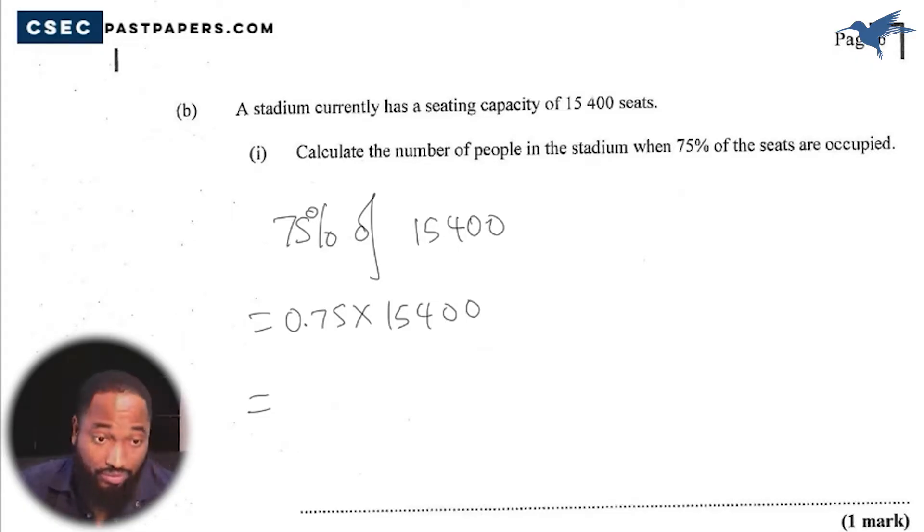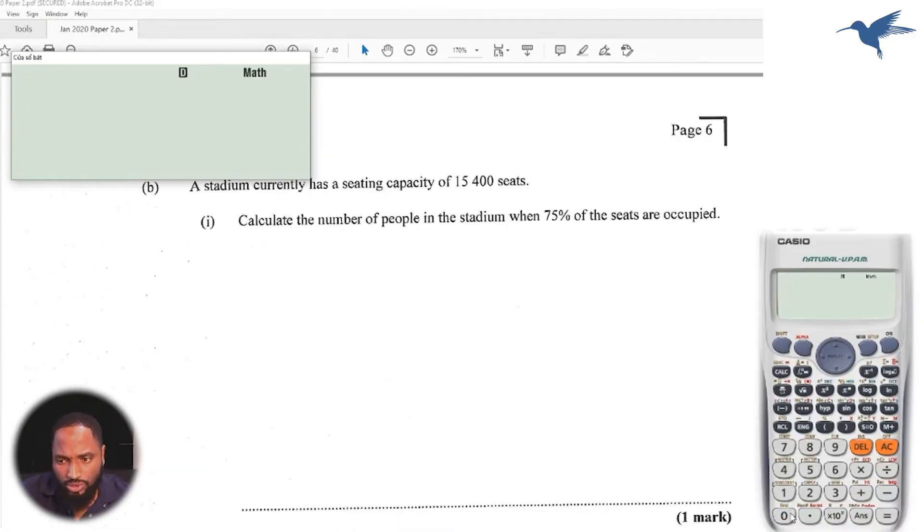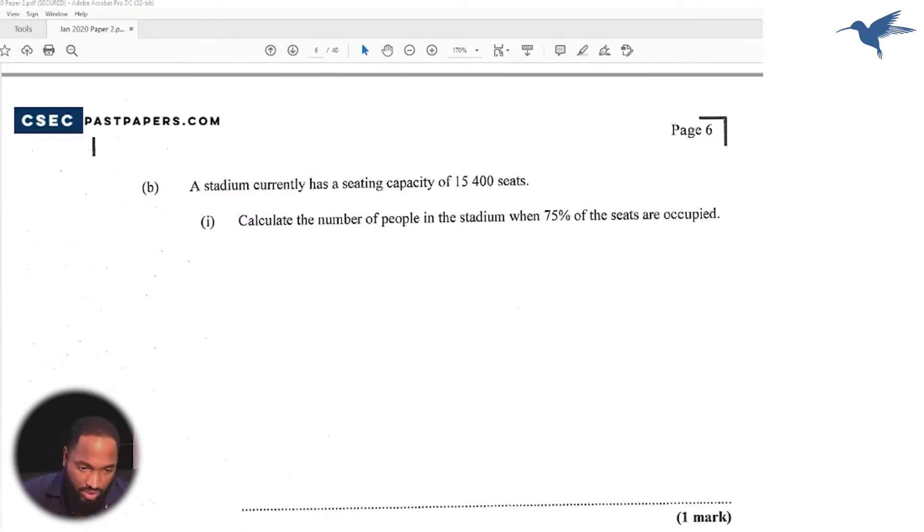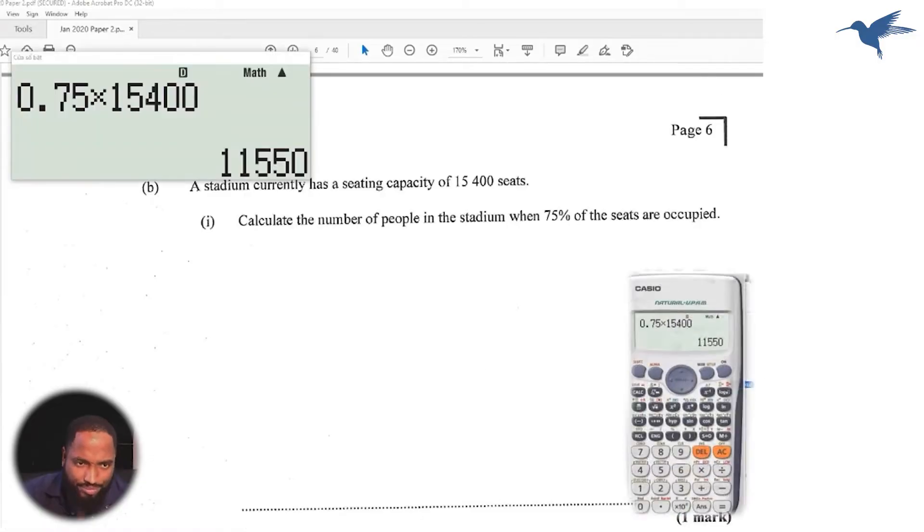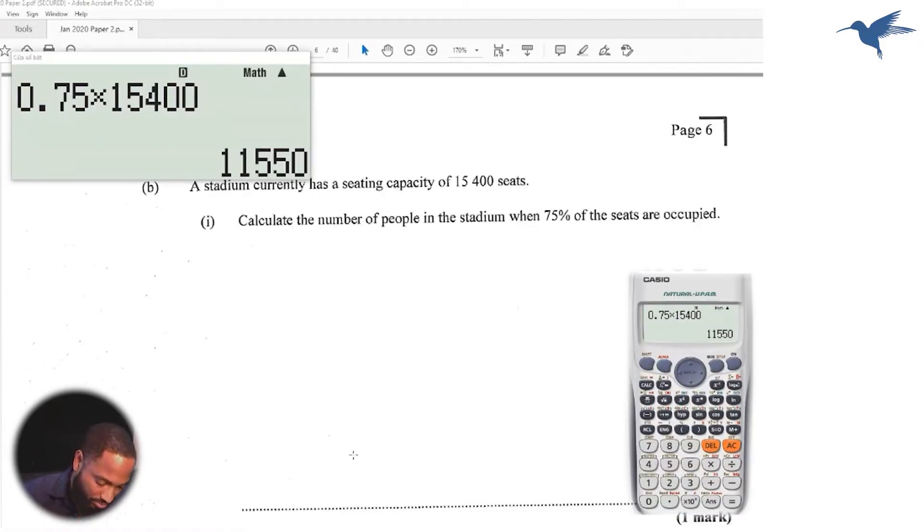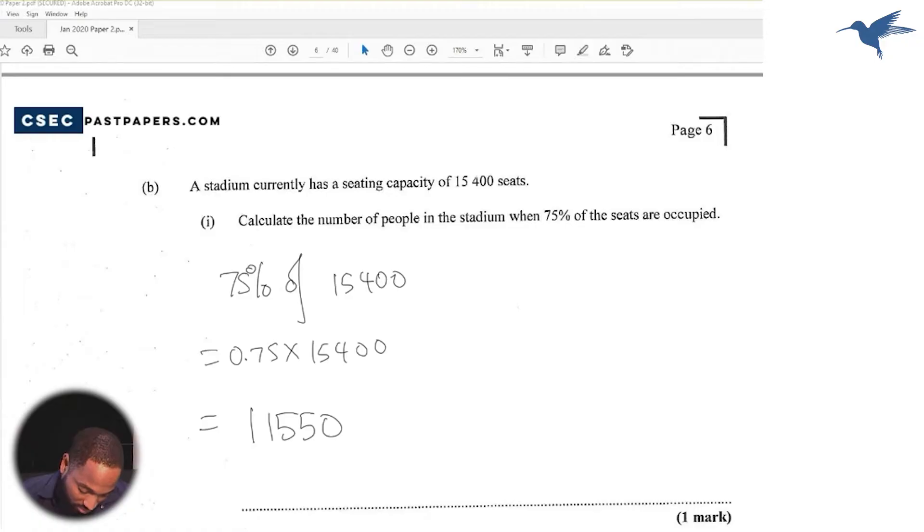Calculating number of people, there's no tricks in the question. There isn't like two people per seat or anything, so 0.75 multiplied by 15,400 is what we'll go with. I'll use my calculator for that. 0.75 or you can write 75 over 100 multiplied by 15,400, and I get 11,550.